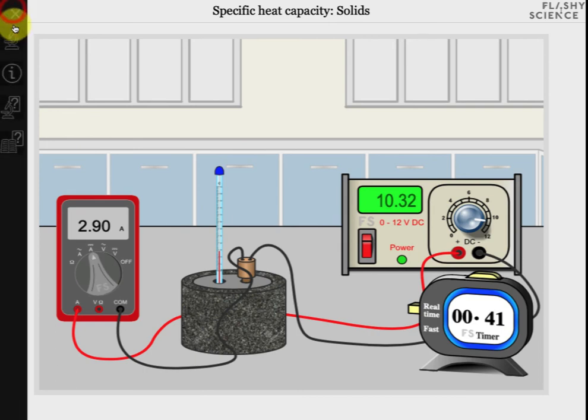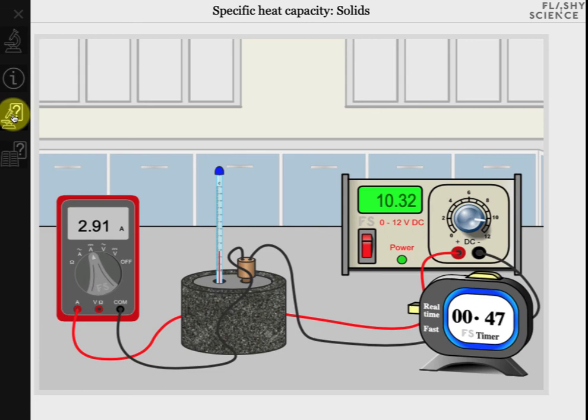The fourth icon opens up a screen of questions directly related to the experiments you might have just performed. The final icon opens up revision questions that cover the area of specific heat capacity of solids more generally. All questions are answered automatically and many contain randomly generated numbers, so you can retake them as many times as you like for practice.